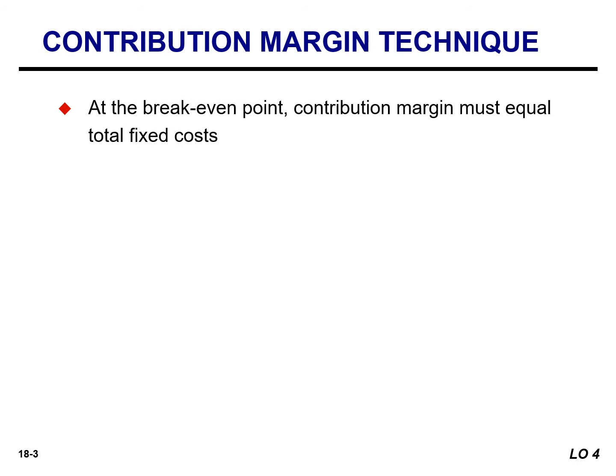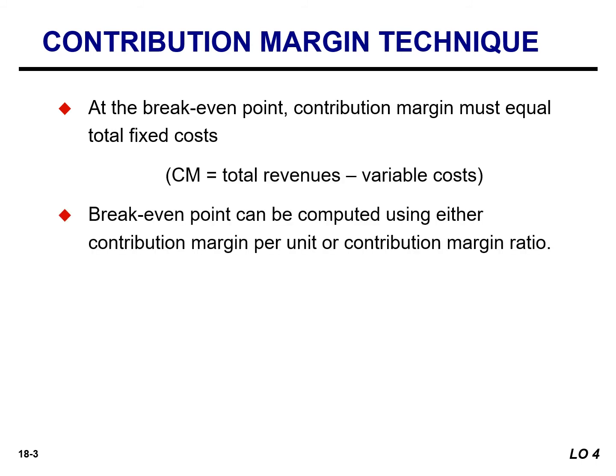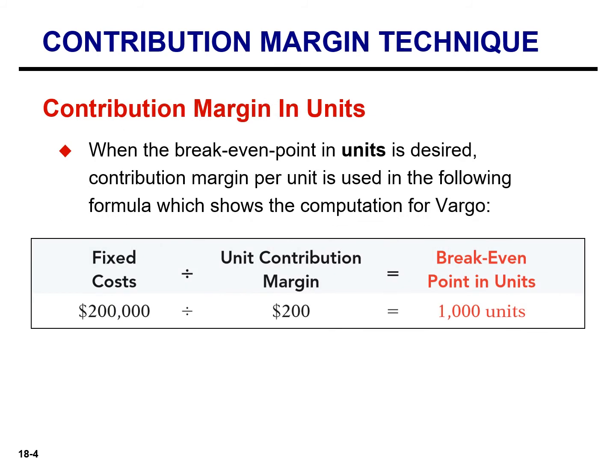Many managers use the contribution margin to compute the break-even point. At the break-even point, contribution margin must equal total fixed cost. The break-even point can be calculated using either contribution margin per unit or the contribution margin ratio. To obtain the break-even point in units using the contribution margin technique, we simply divide fixed cost by the unit contribution margin.